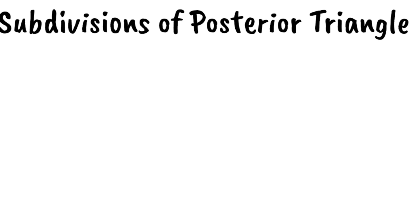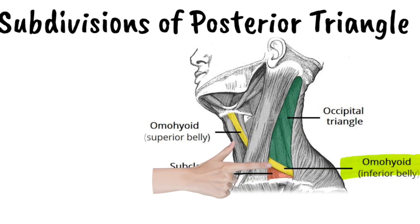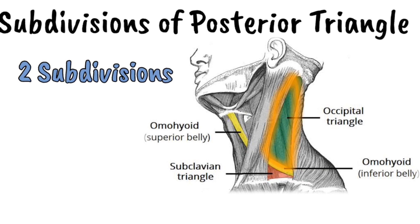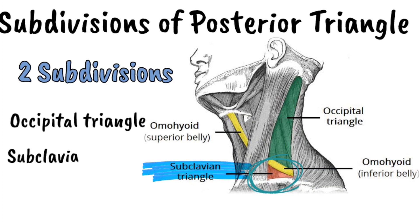Regarding the subdivisions of the posterior triangle: the inferior belly of the omohyoid crosses the lower part of the triangle. This inferior belly of the omohyoid lies superficial to the fascial carpet and divides the posterior triangle into two subdivisions. The larger upper part is called the occipital triangle, and the smaller lower part is called the subclavian or supraclavicular triangle because it lies just above the clavicle.